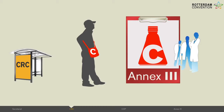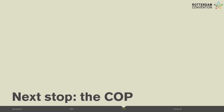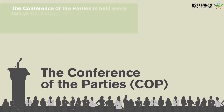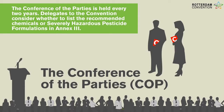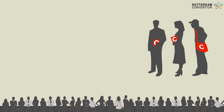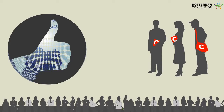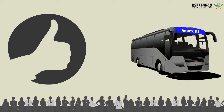Now let us follow the recommended chemical to the next stop — the Conference of the Parties, or the COP. The meeting of the COP is held every two years. The COP considers whether to list the recommended chemicals or severely hazardous pesticide formulations in Annex 3, and the decision of the COP is final. When the COP decides a chemical or severely hazardous pesticide formulation is to be listed in Annex 3, it then boards the bus for the final leg of the journey.